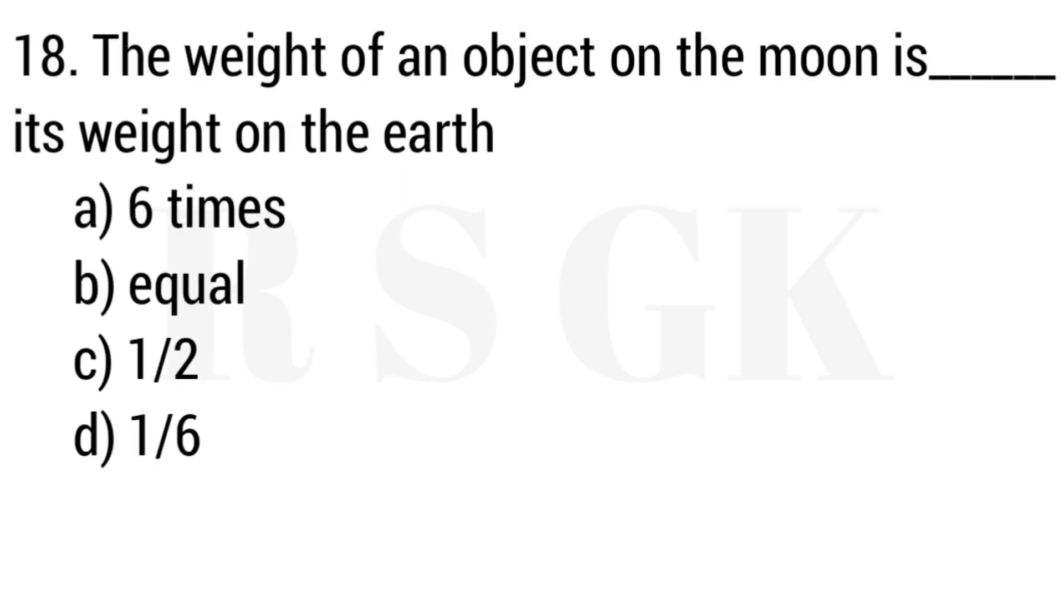Question 18: The weight of an object on the moon is blank its weight on the earth. Answer: Option D, One by six.